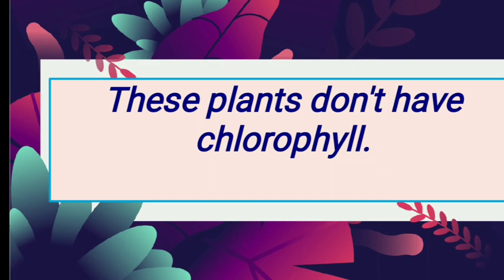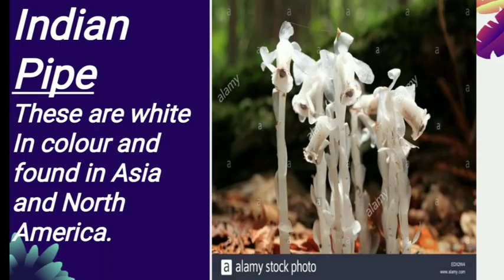Some examples: the first is Indian Pipe. As the name suggests, it is found in India, as well as in Asia and North America. It is white in color, does not have any green leaves, and survives on dead and decaying matter.